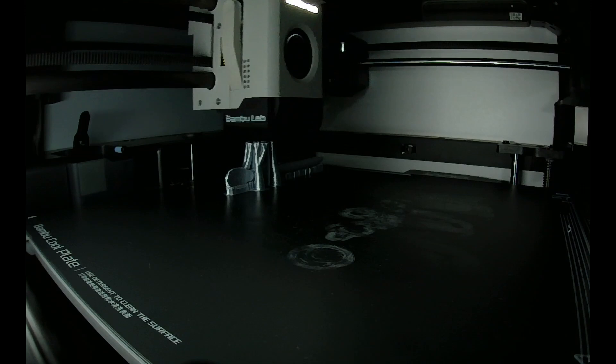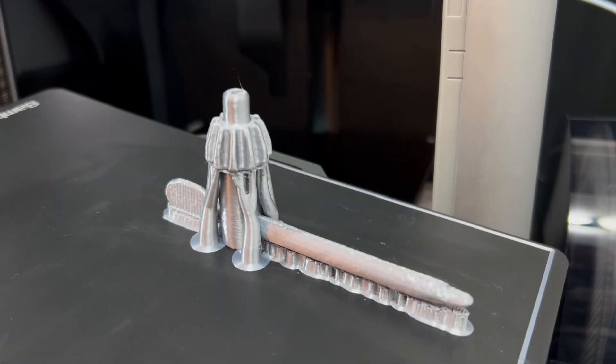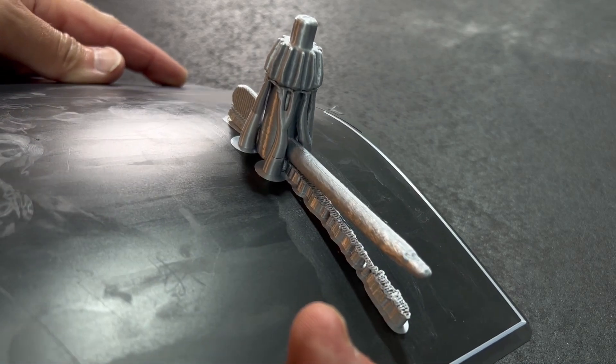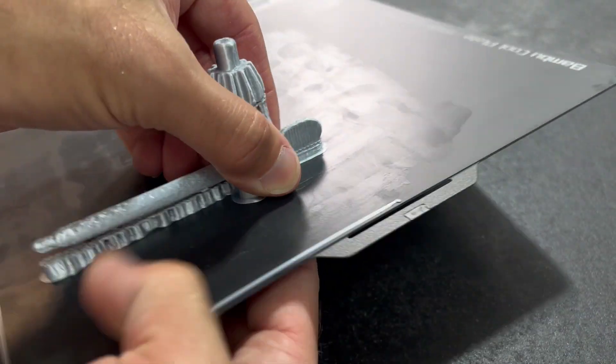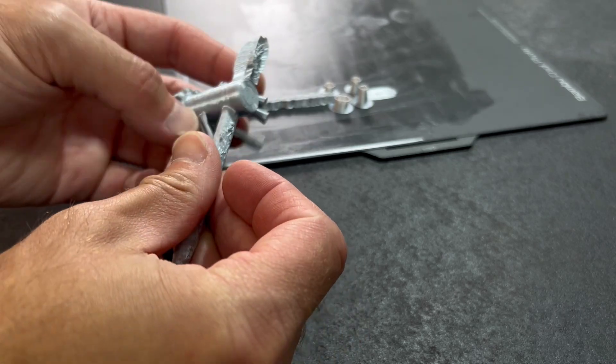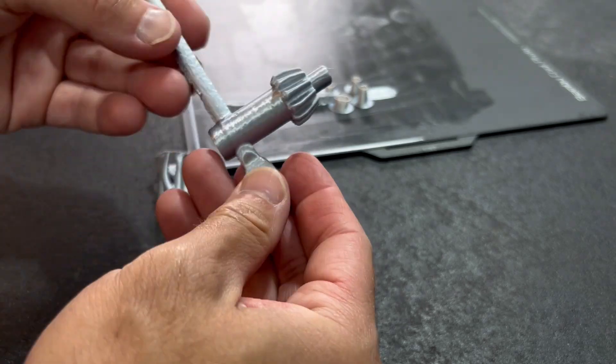Shifting over for a minute to the key, I'm going to try printing this on the Bamboo X1 Carbon. This is just printed in PLA. I'm curious to see how accurate it is to the original. And of course, can it actually fit into the chuck and turn.